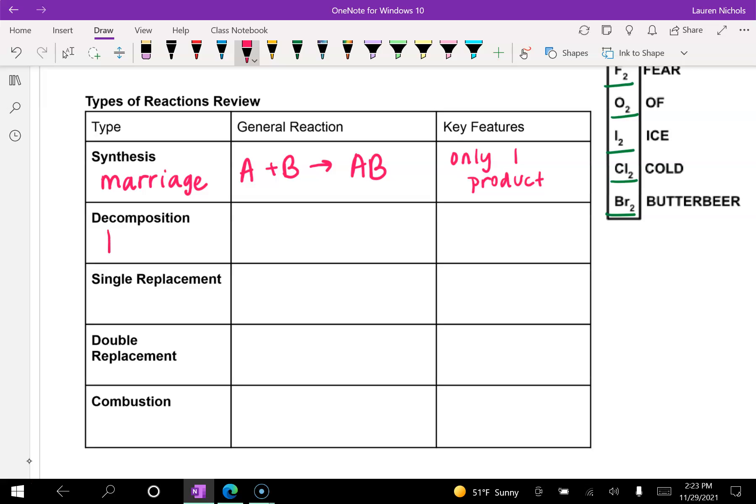Decomposition is the opposite. So the opposite of marriage is divorce. And so in this case, the general reaction is also the reverse. Your compound splits apart into separate elements of A and B. And our key feature is that there's only one reactant. Now, if you're having trouble remembering where the reactants and products are, remember reactants are on the left and then products are on the right.